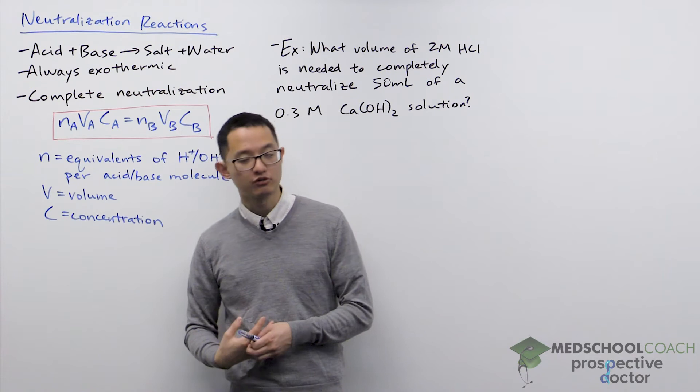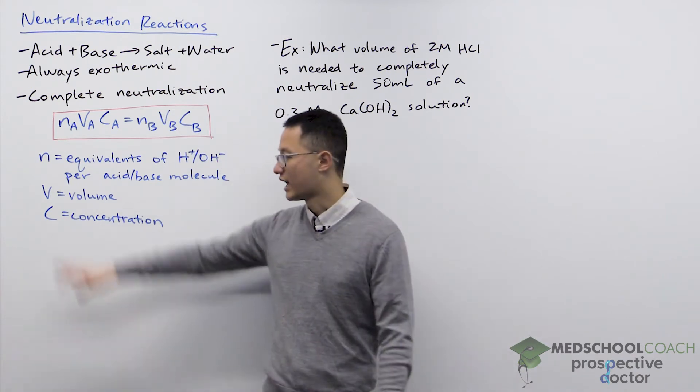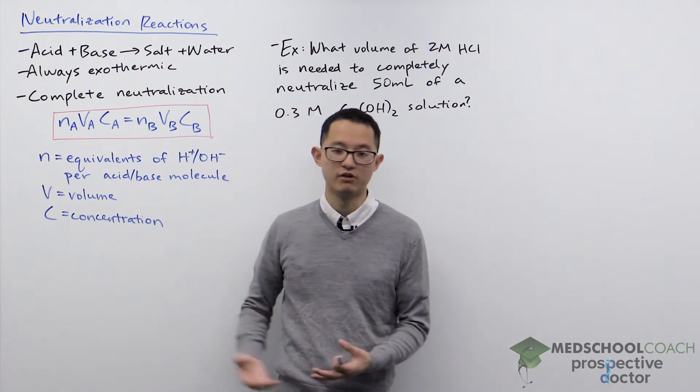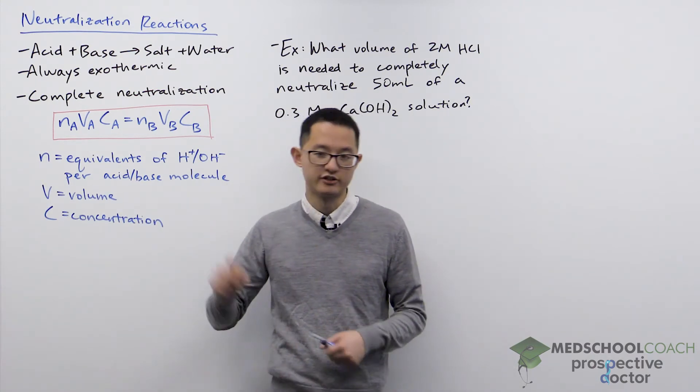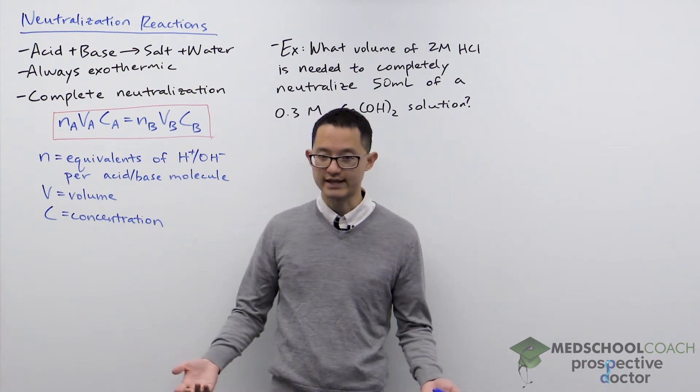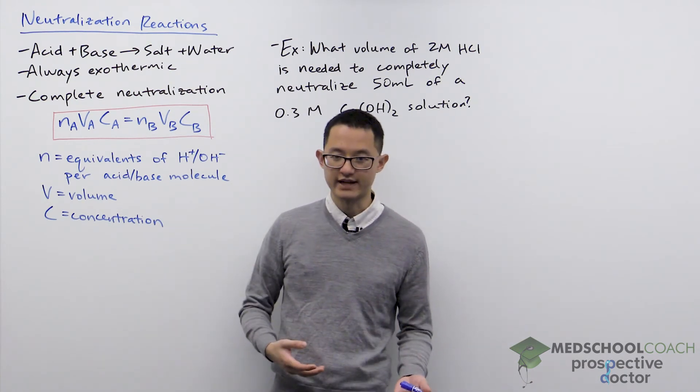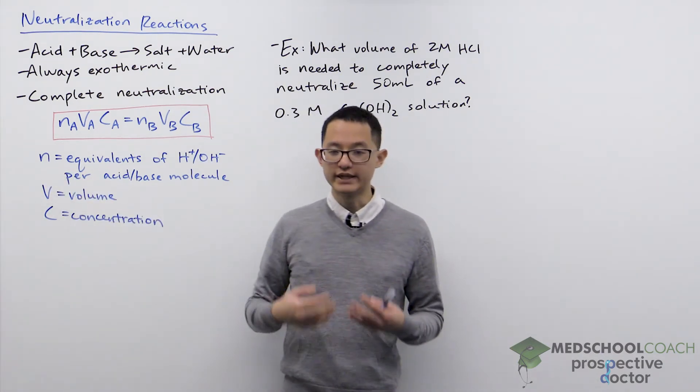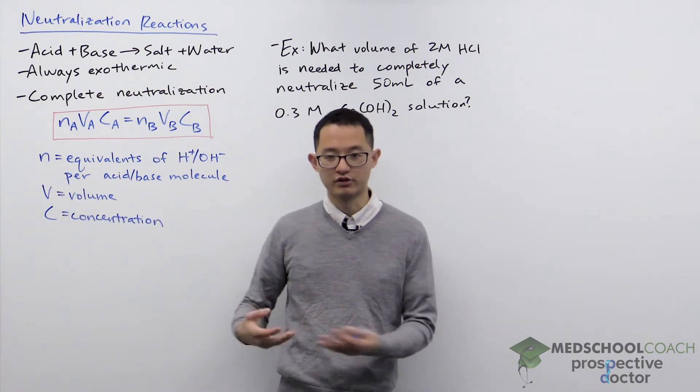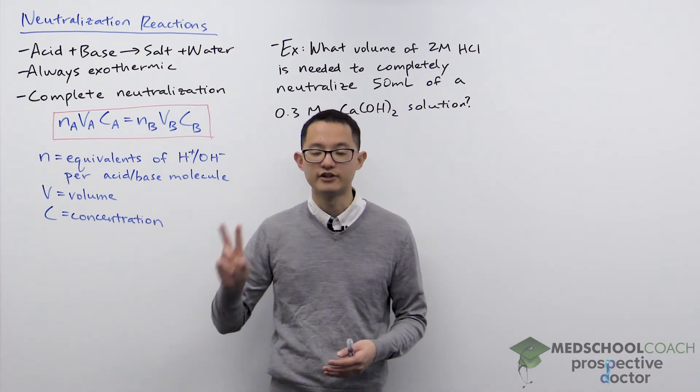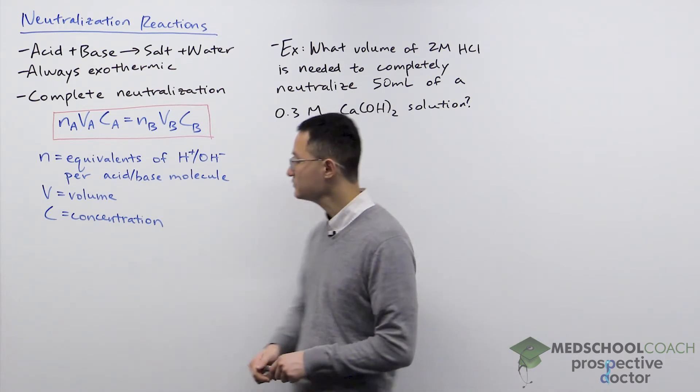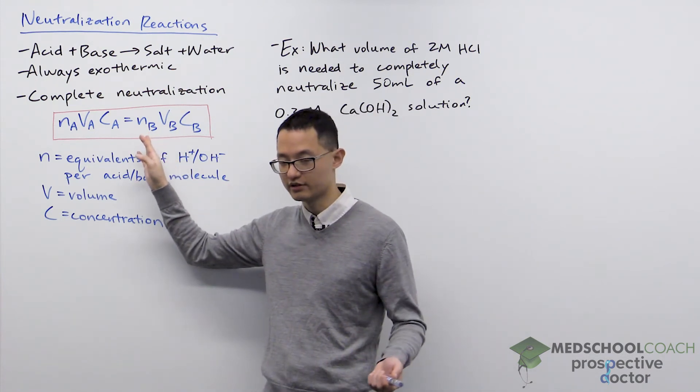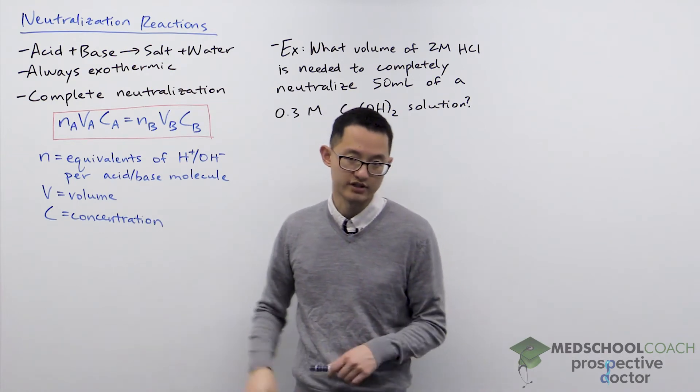For instance, hydrochloric acid, HCl, would have an equivalence of N equals 1. For every HCl molecule, you get one hydrogen ion. If you consider a diprotic acid like sulfuric acid or carbonic acid, they would have an N of 2 because for each sulfuric acid or carbonic acid molecule, you get two hydrogen ions. The same is true for bases - some bases will give you one hydroxide per molecule, others will give you two hydroxides per molecule.